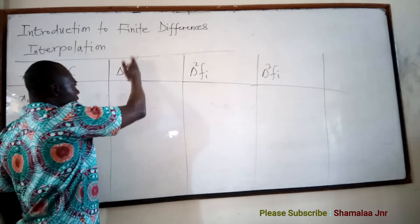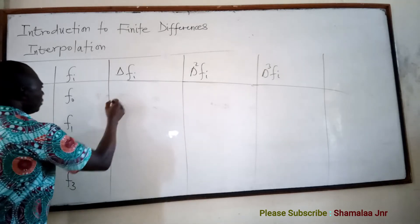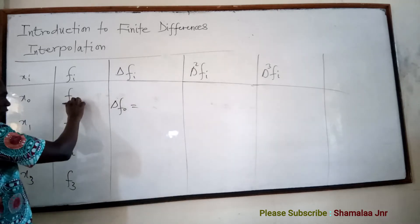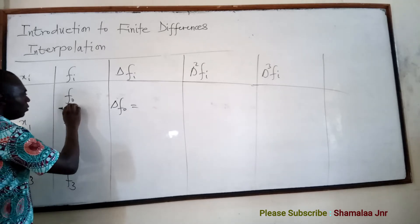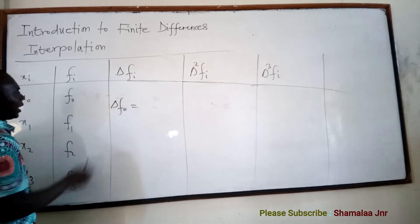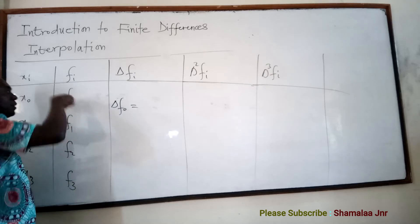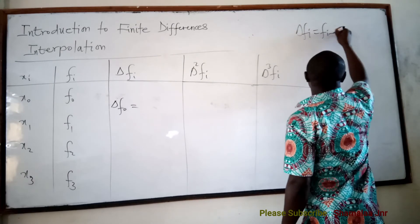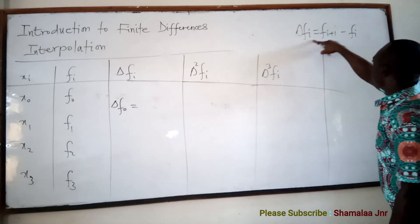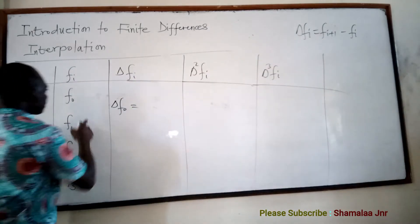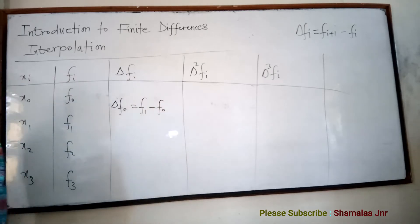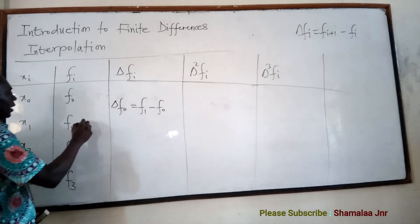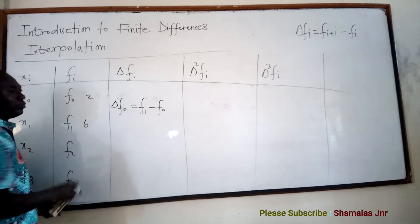Now let's look at the first forward differences. To find the first forward difference, delta F0 is equal to F1 minus F0, because delta Fi equals Fi+1 minus Fi. When you are given a table, these will be numbers — for example, if F1 is 6 and F0 is 2, then delta F0 equals 6 minus 2, which is 4.